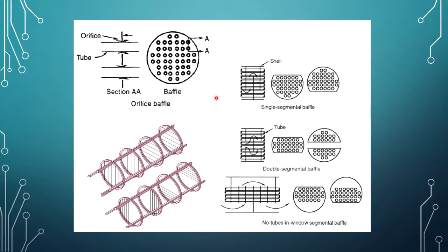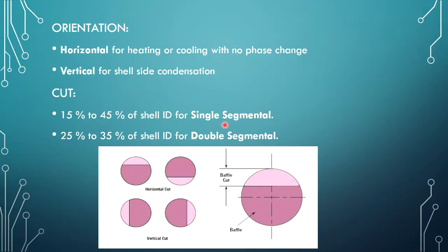This image shows how single segmental baffles look, and these images show how double segmental baffles look. This image is for orifice type baffles. Baffles are also classified based on their orientation: horizontal type baffles and vertical type baffles.